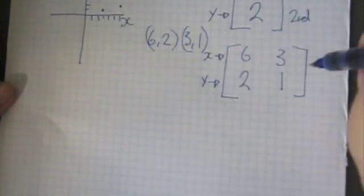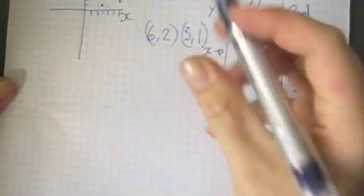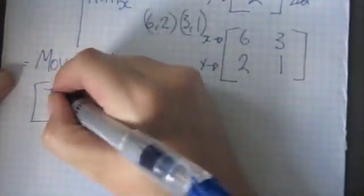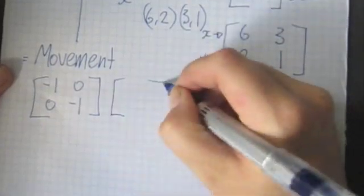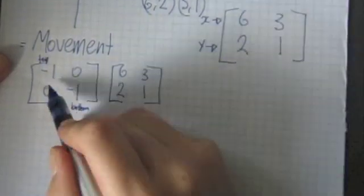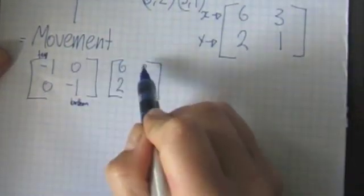So we're going to start with the point (6,2) and put them in a bigger matrix. So you've got (6,2), (3,1), x and y. Now we're going to transform this movement by using this matrix. Transform means move. To manipulate the graph movement, you have to pre-multiply this matrix by the points matrix.